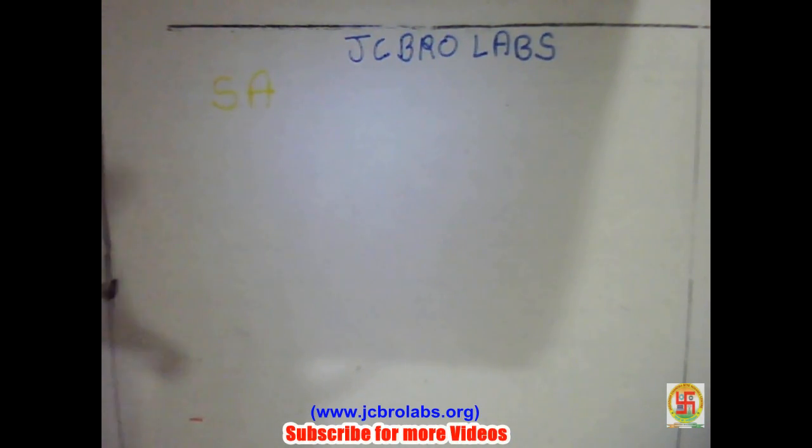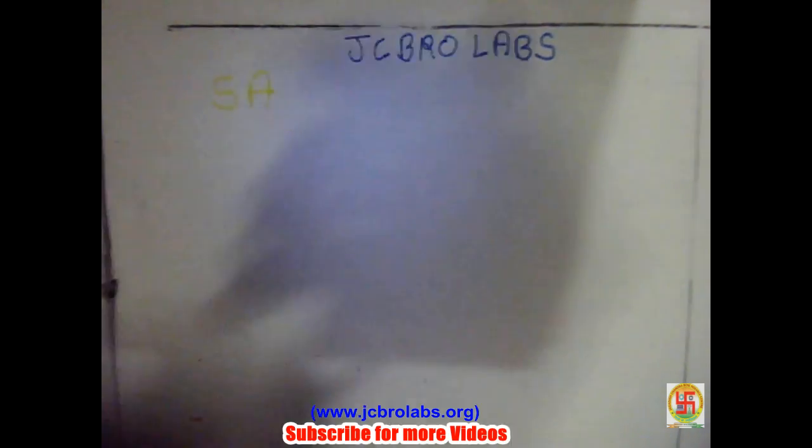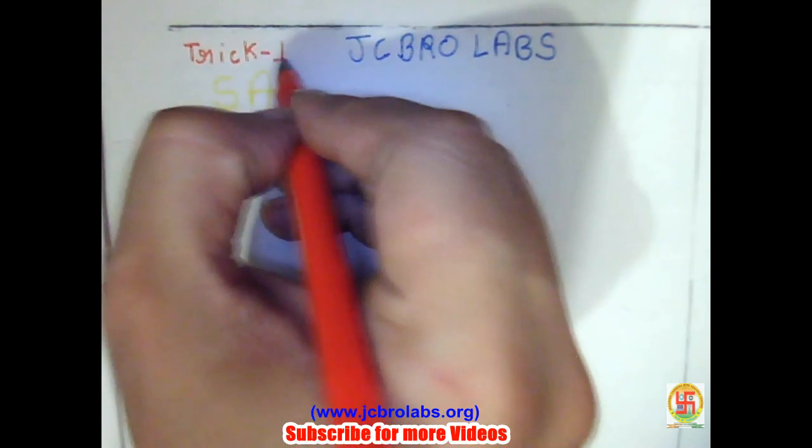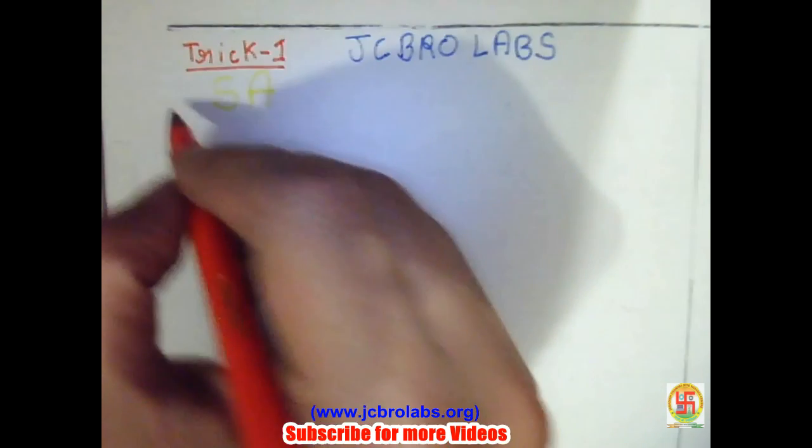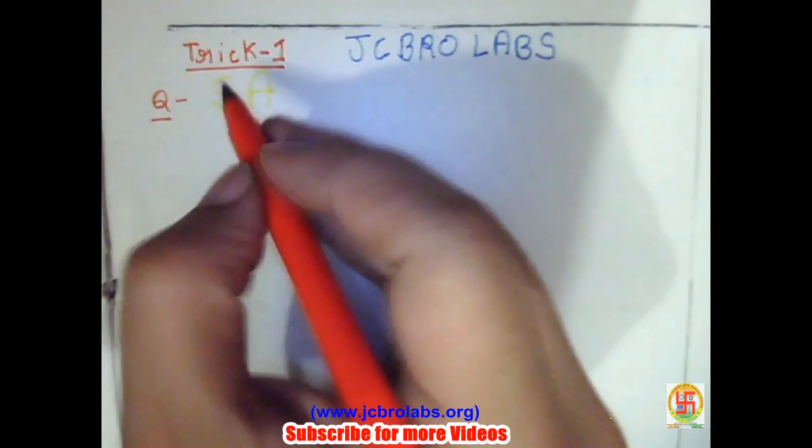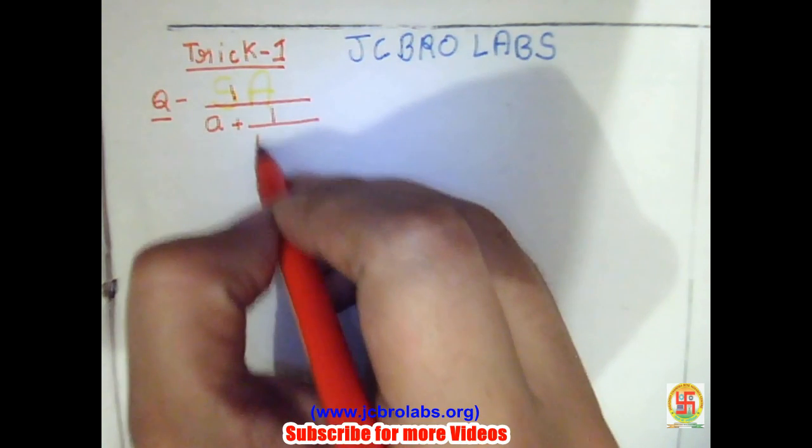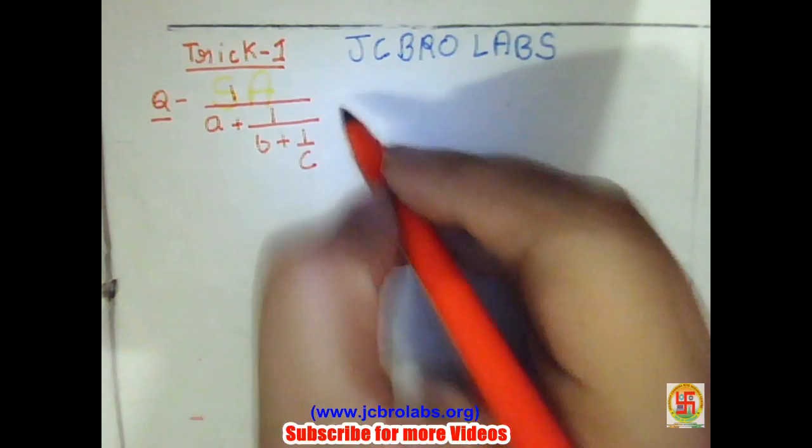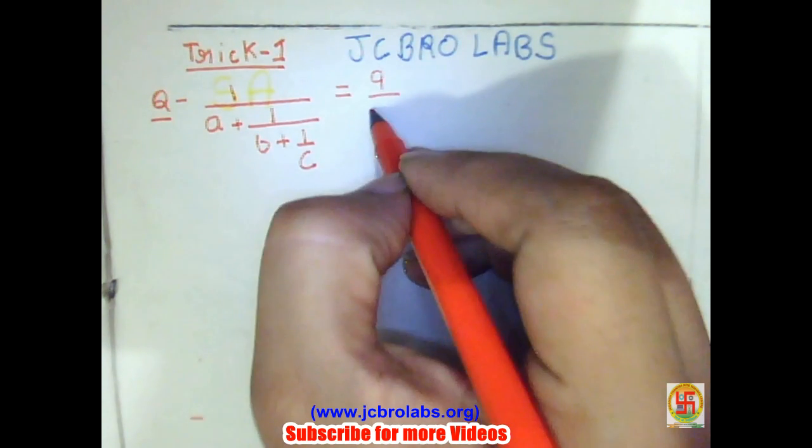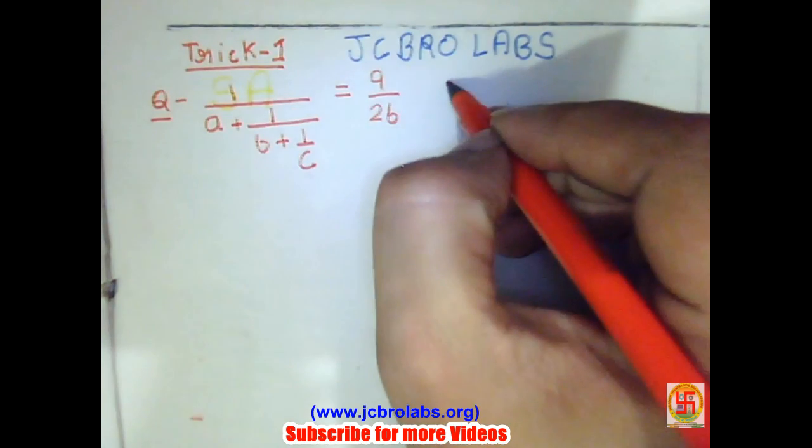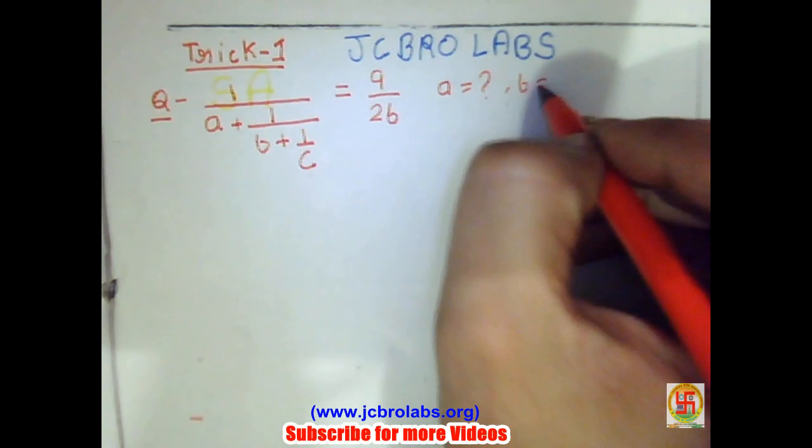We will start from the basics. First, we will deal with the simplest example, which we can call Trick 1. Sometimes in competitive exams, we are asked questions like: suppose 1/a + 1/b + 1/c = 9/26, and we are asked what is the value of a, what is the value of b, and what is the value of c.